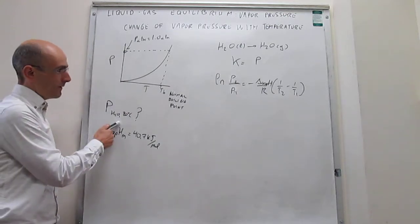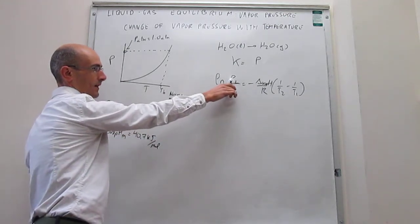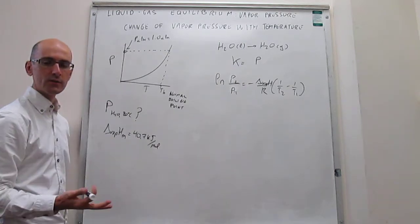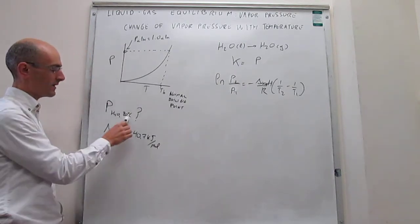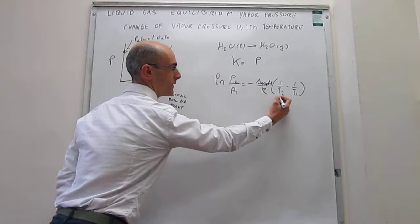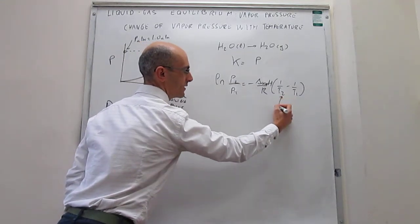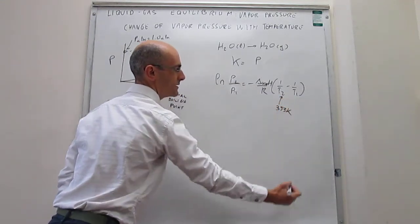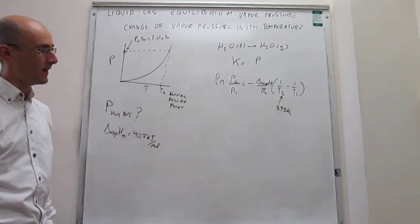So what we have to do is find here what this P2 is, where 2 would be the temperature that we're interested in, 80 Celsius. So we know that that is going to be equal to 353 K, which is the same thing as 80 Celsius.